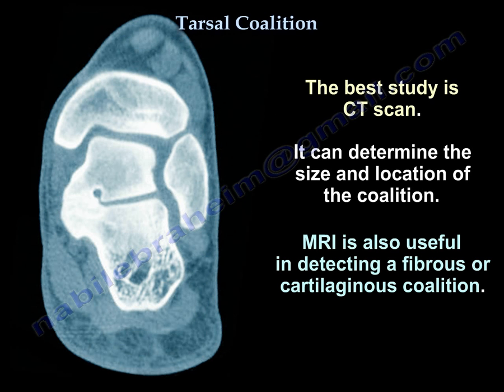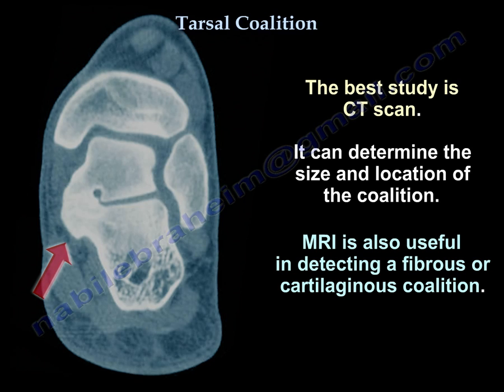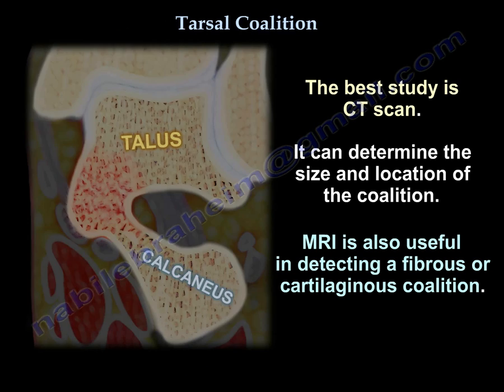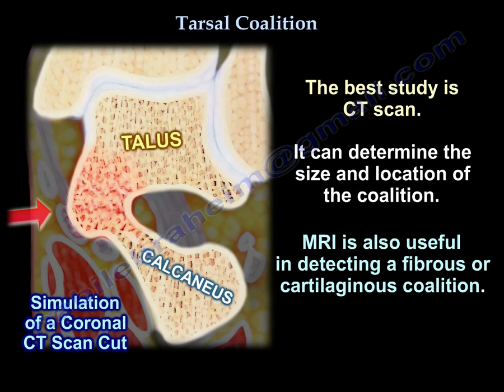The best imaging study is a CT scan, as it can determine the size and location of the coalition. MRIs are also useful, especially for detecting a fibrous or cartilaginous coalition. An illustration of a coronal cut CT scan shows the coalition nicely as seen.